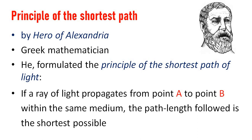From point A to point B within the same medium, the path length followed by light is the shortest possible. In a homogeneous medium, light travels in a straight line. This concept is acceptable, but it has limitations.